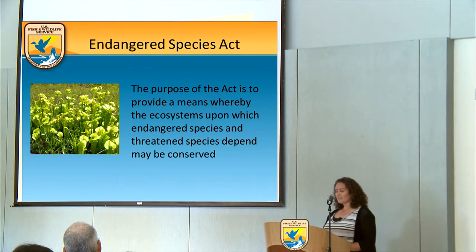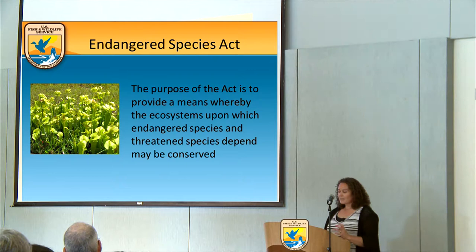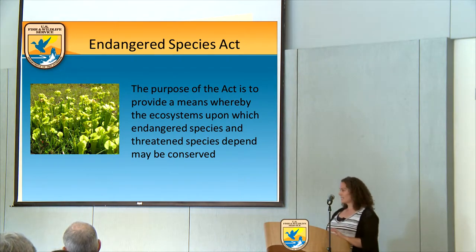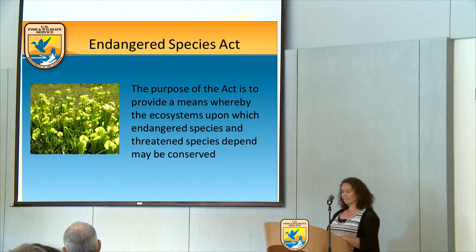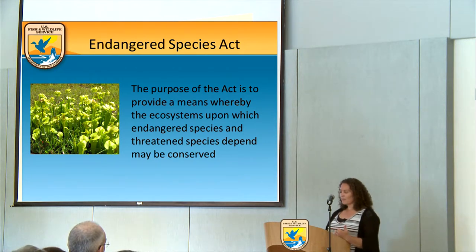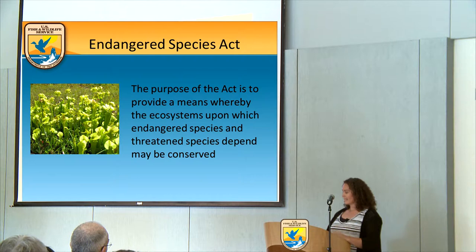The Federal Endangered Species Act was passed in 1973. The purpose of the act is a means whereby the ecosystems upon which threatened and endangered species depend are conserved. Additionally, we provide a program for the conservation of such species and work with other treaties and conventions such as the Migratory Bird Treaty Act and CITES.